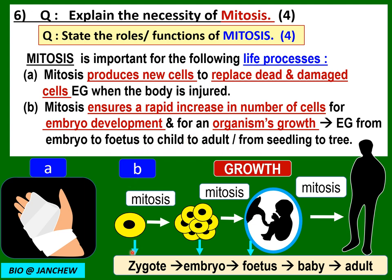Human life starts as a zygote — a single diploid cell — when fertilization between sperm and ovum occurs. It undergoes mitosis and divides into two cells, then four, forming a ball of cells called the embryo. As mitosis continues, the fetus forms after about three months, and after nine months the baby is born. From baby stage to adult stage, mitosis continues through the years to increase the size of the human being.